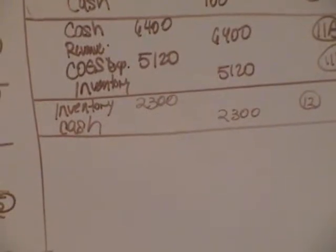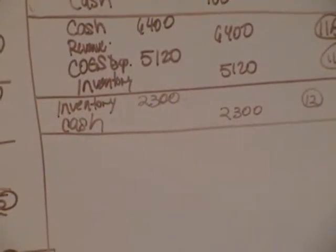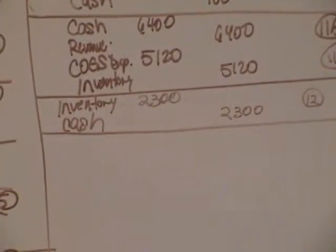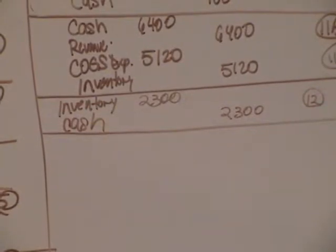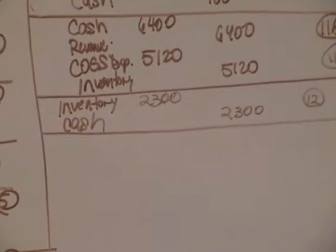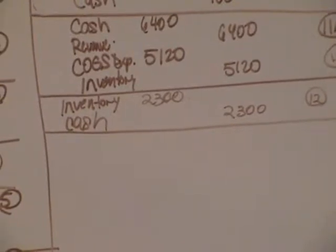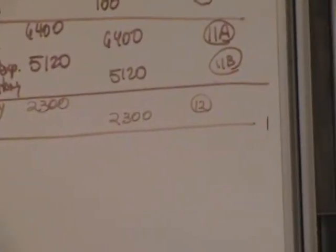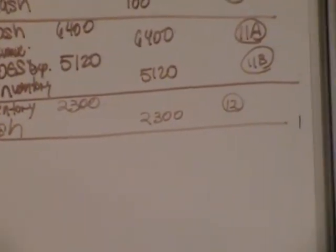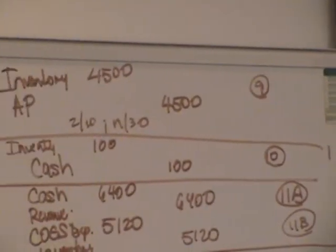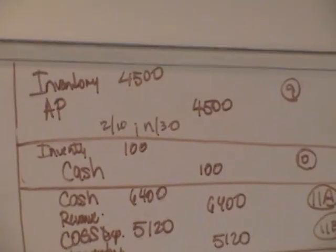Read that to us again, McGowee. Paid Skywalker Distributors in full less discount. I see. I also see that in entry 9, we have an error. Actually, in entry 9, we don't have an error — the journal entry was correct. But what happened was she posted it incorrectly in entry 9.